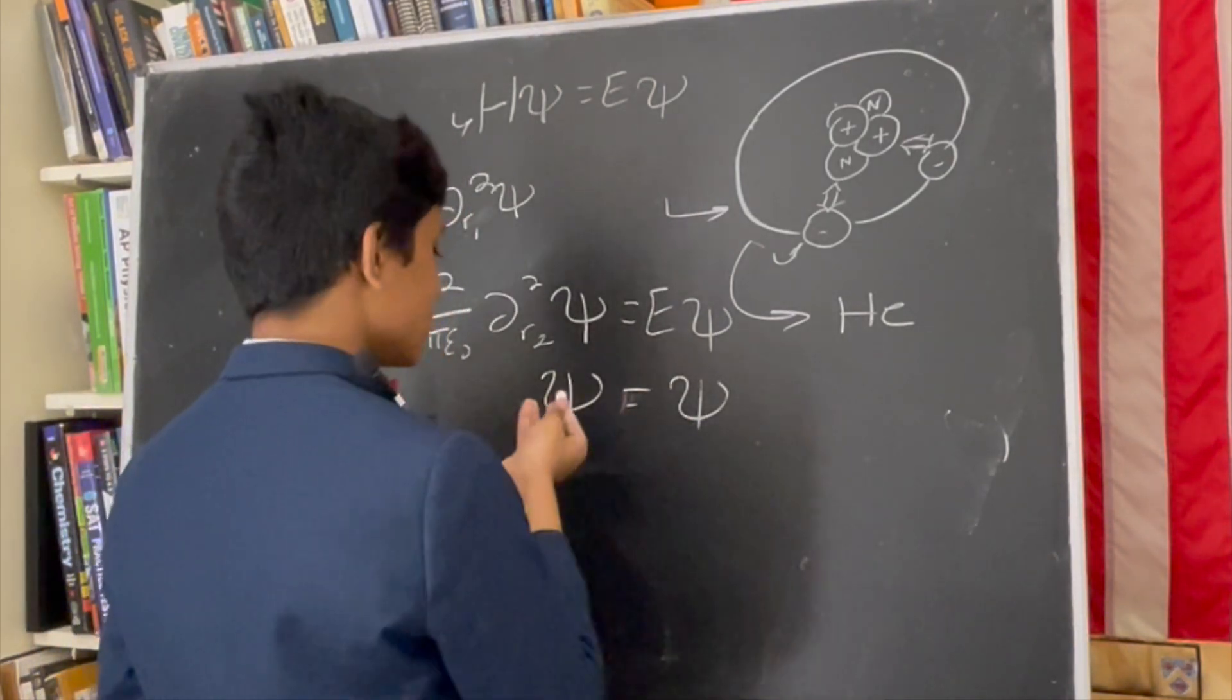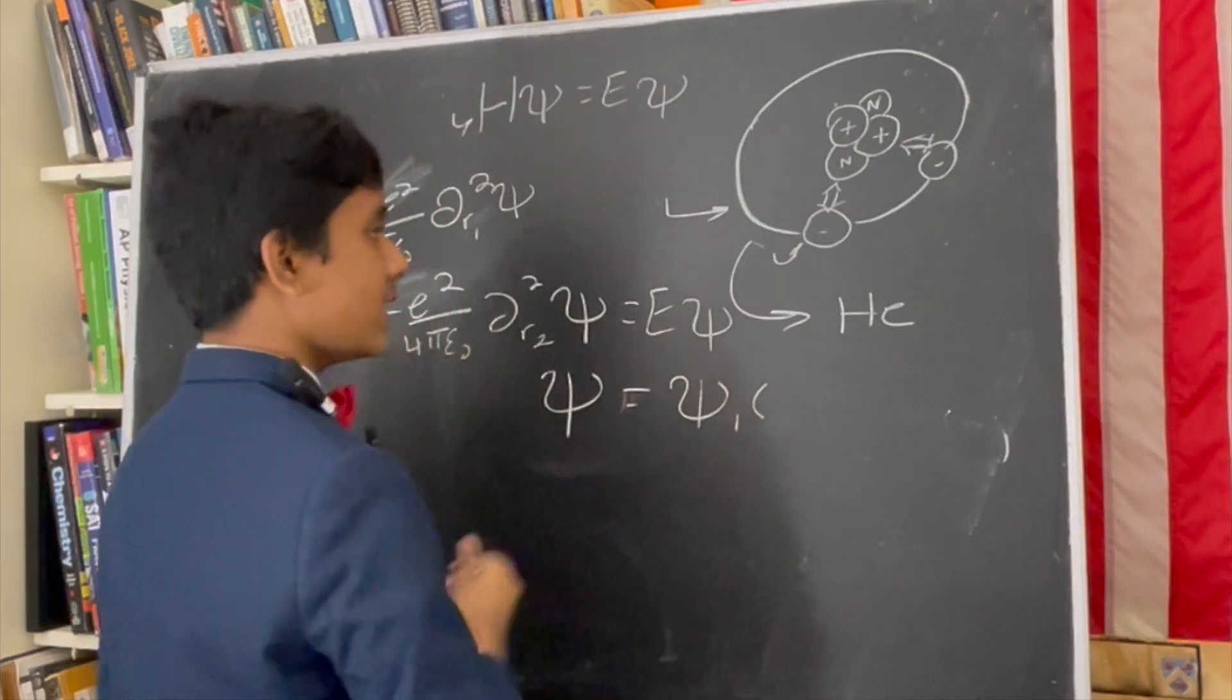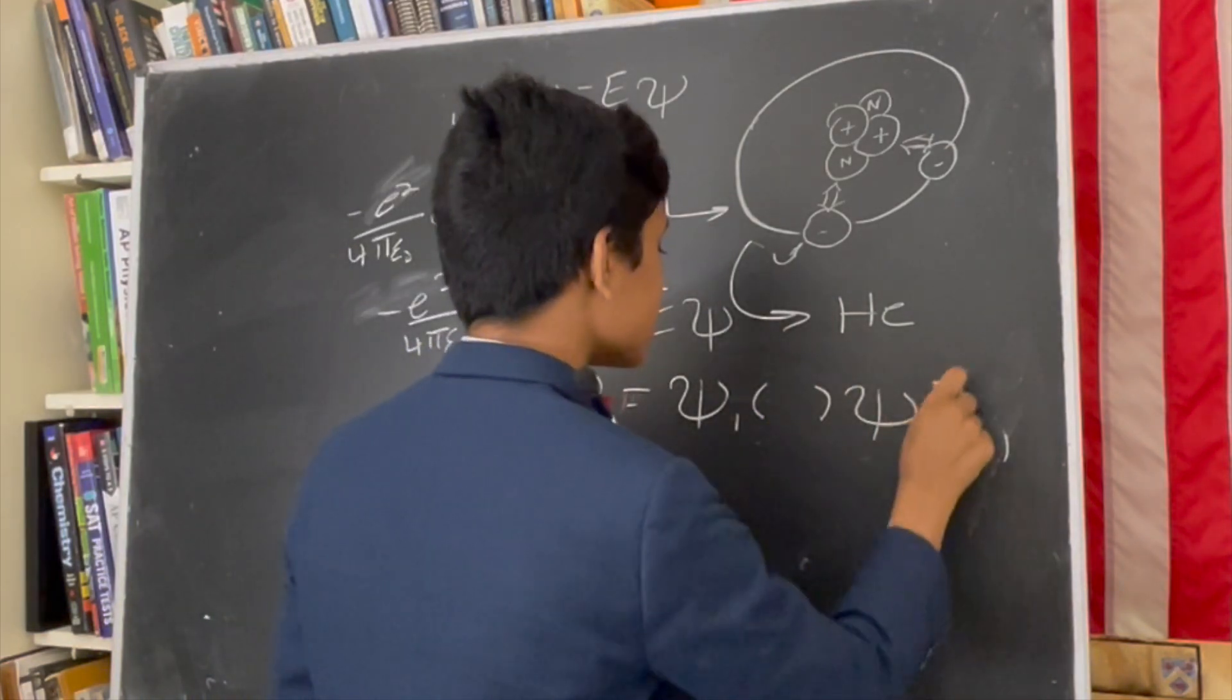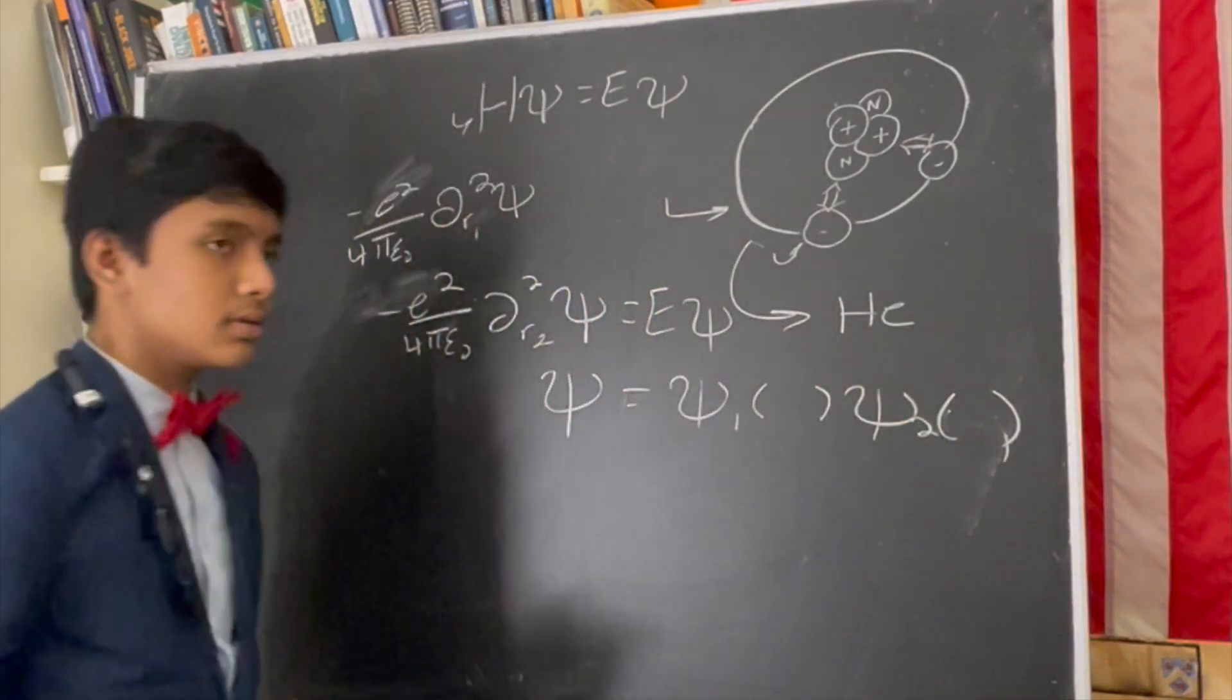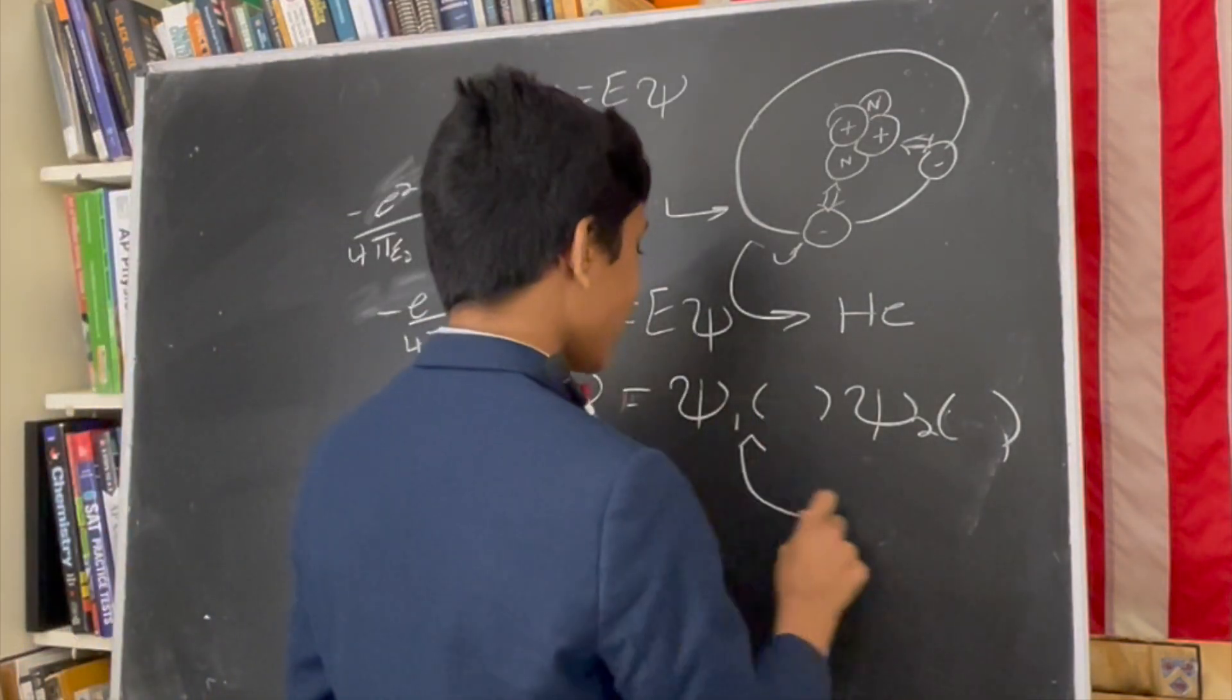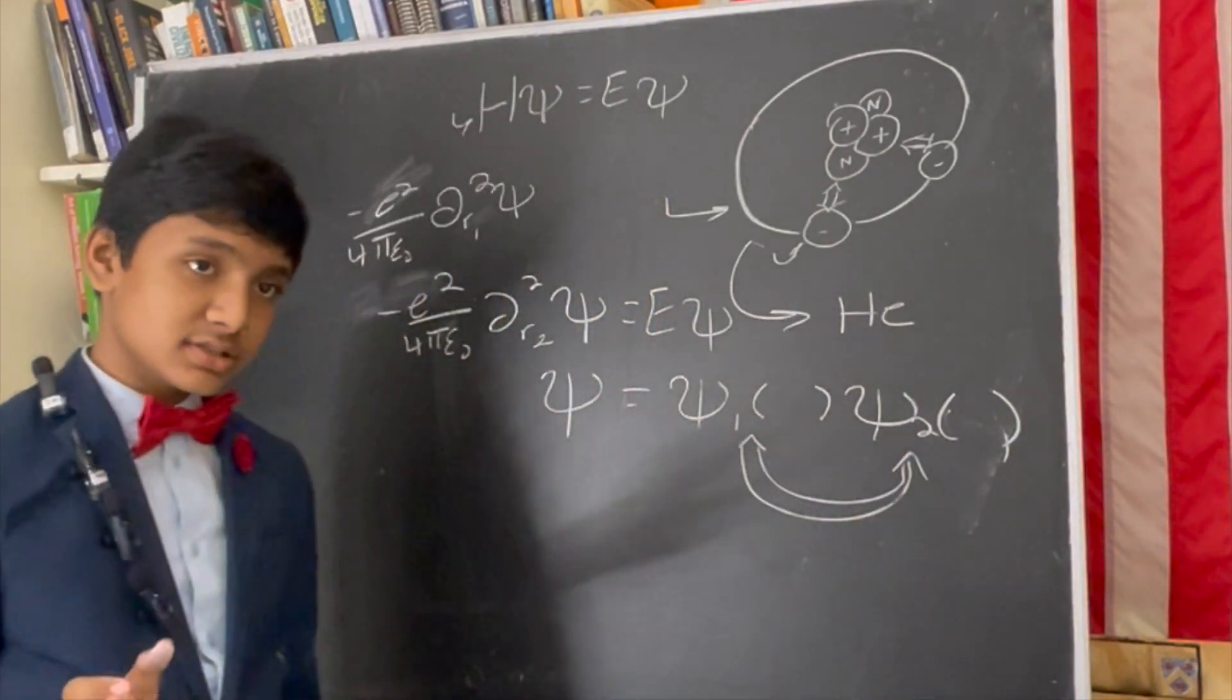You just have the total solution equal to the solution if there was only electron 1 multiplied by the solution if there was only electron 2. So that's interesting. Since the two electrons are functionally identical, we'll get to that in just a moment.